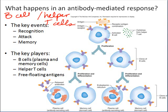Similar to the cell-mediated response, there are three phases or key sequences that happen in the antibody-mediated response: recognition, attack, and memory. The other key players aside from B cells and helper T cells are memory B cells, a specialized type of B cell called the plasma cell whose job is to make millions of copies of antibodies very fast, and free-floating antigens from whatever agent has been infecting us.